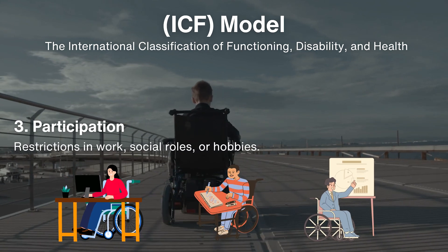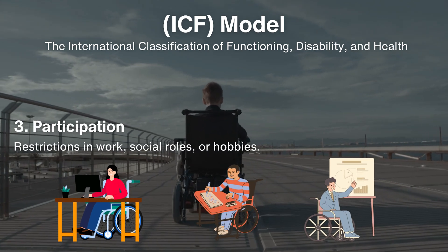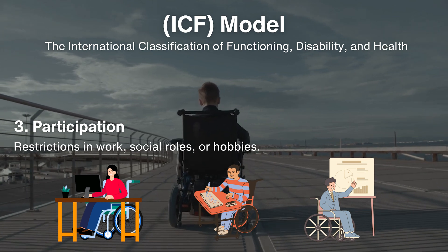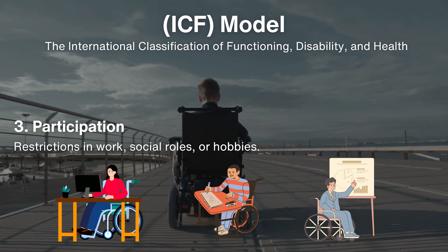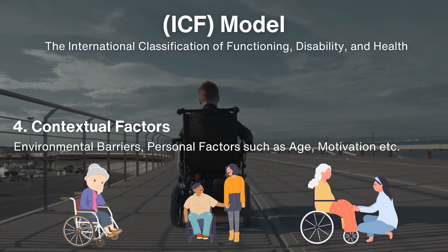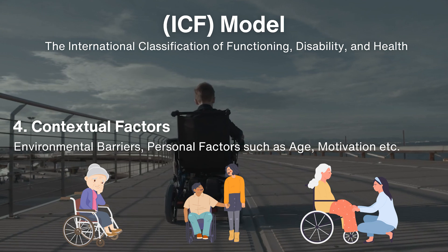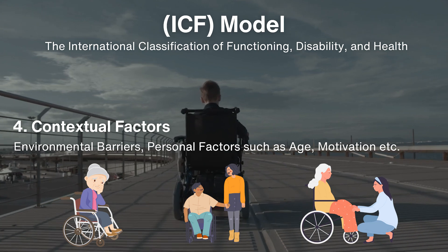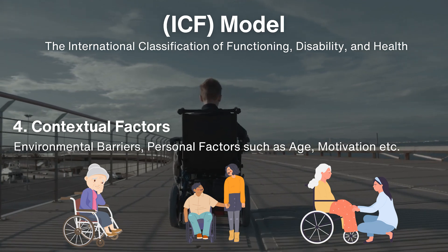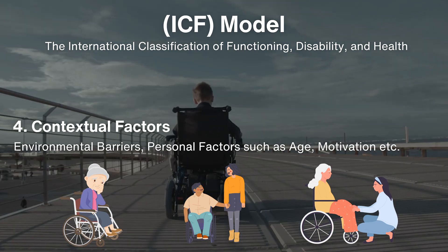The third component is participation. Here we list restrictions in work, social roles, or hobbies of the patient — for example, whether the patient has an occupation. The fourth component is contextual factors, divided into environmental factors and personal factors, including environment barriers, age, motivation, family support, etc.